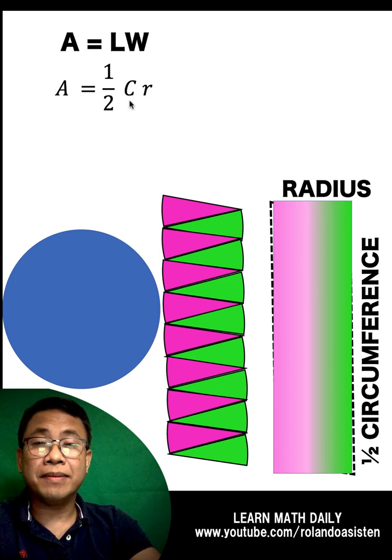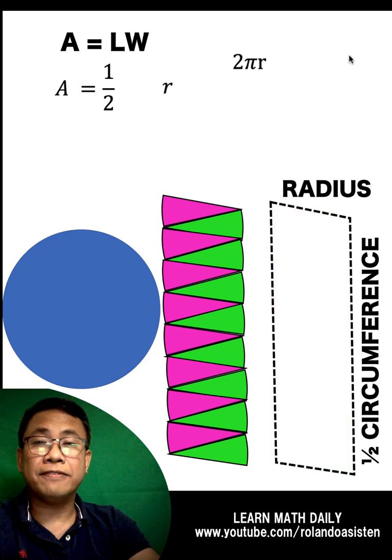But what is the value of the circumference? We know that C is equal to 2πR and replacing this C by 2πR, we now have one half times 2πR times R.